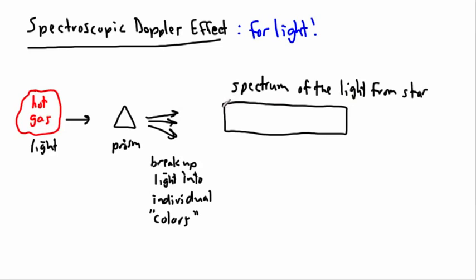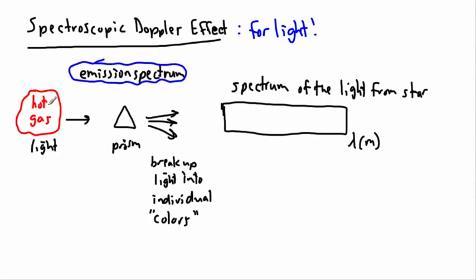We can see these transitions in the spectrum. Gases have different energy states possible, and each of those gives a very specific wavelength. So we break up the light into its component wavelengths and end up seeing what we call an emission spectrum. If it was just hot gas through a prism, the background would look dark except for some bright characteristic lines — maybe a red line here and a bluish one over there — representing particular wavelengths of those transitions.